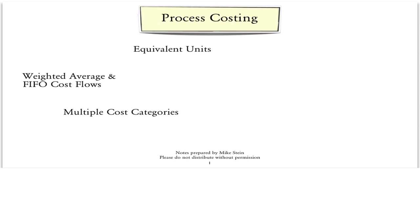Process costing is a technique used to value work-in-process inventory when the items being manufactured are made in large batches or in a continuous operation. There are three technical challenges to process costing: the use of equivalent units, the application of a cost flow assumption such as weighted average or FIFO, and how to keep track of multiple types of costs that may be at different levels of completion in the manufacturing process.